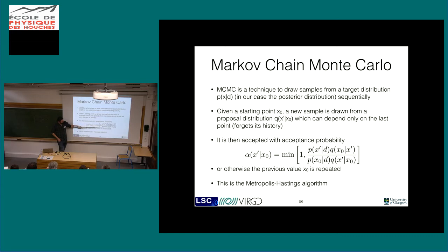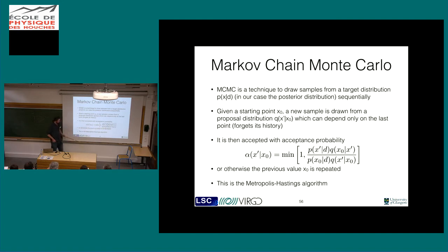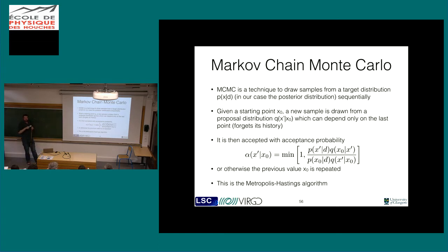The Metropolis-Hastings algorithm gives you a probability ratio of whether to keep the new point or reject it. It's the minimum of one and the ratio of the two distributions you're trying to sample - one at the new point over one at the old point - but you also have the ratio of the proposal distributions Q at the new point and the old point, which is inverted. You're looking at the density of the old point from the new point versus the new point at the old point. The reason is that it has to be unbiased - you don't want your proposal to continually push you in one direction.